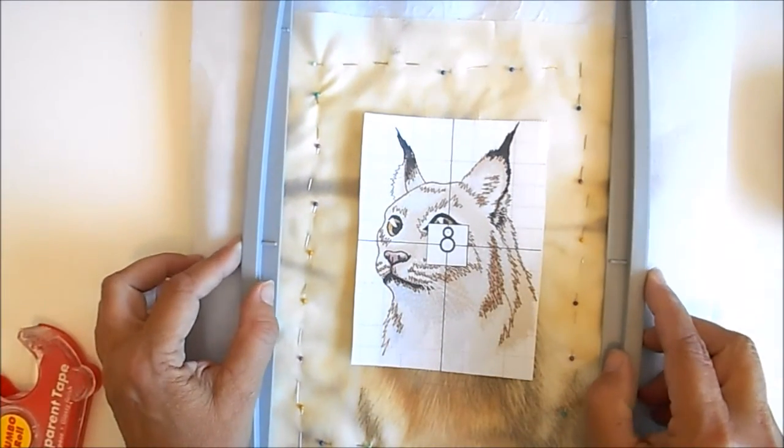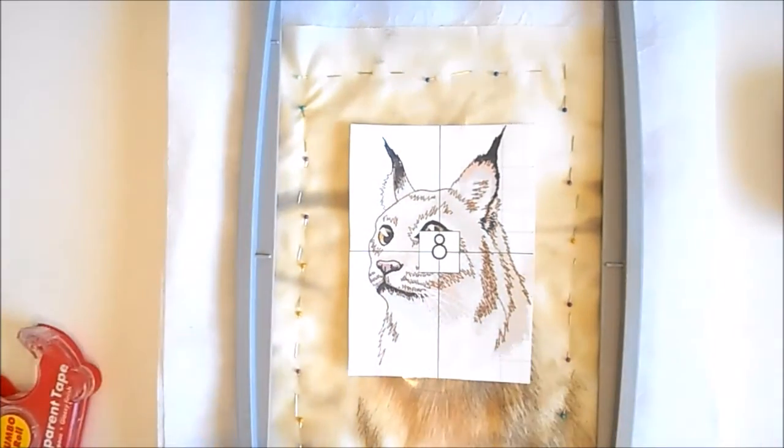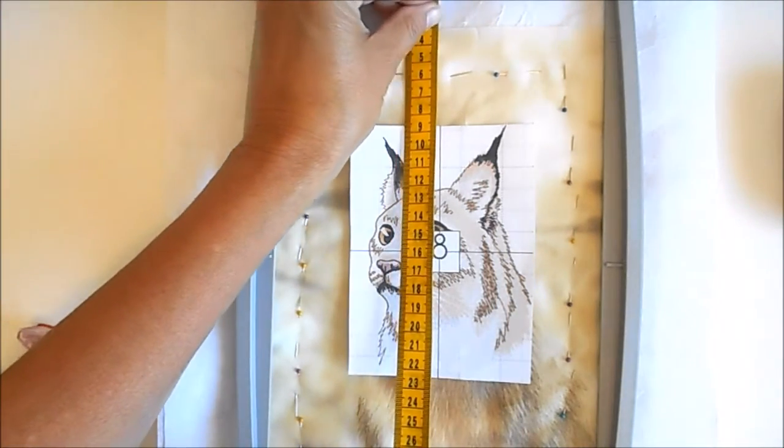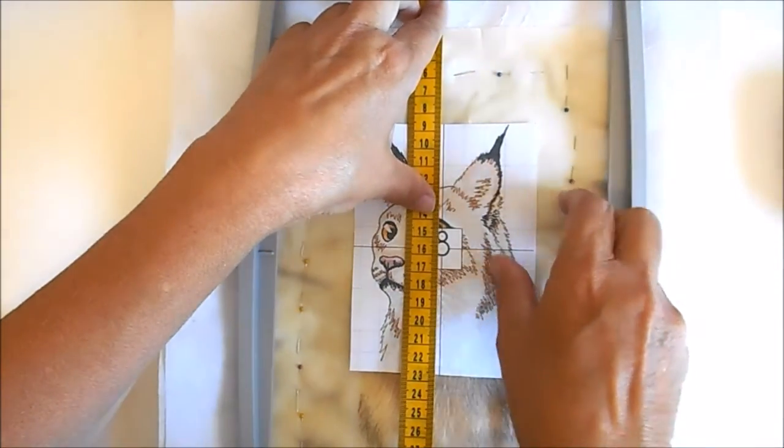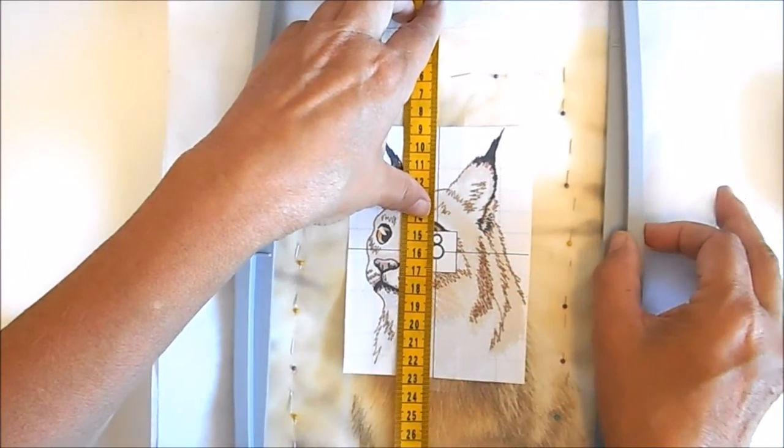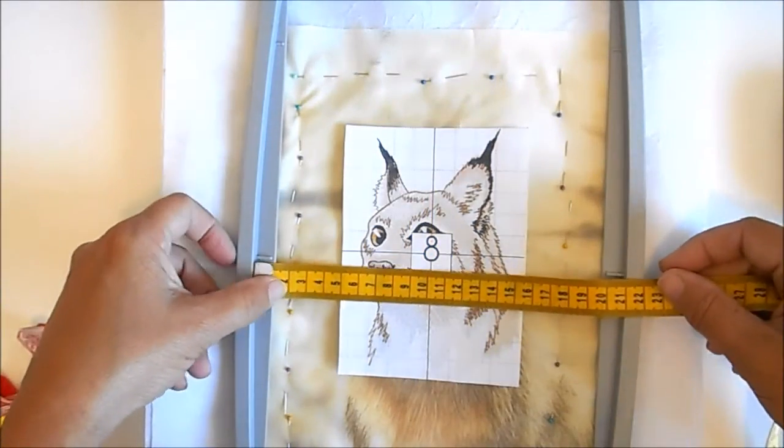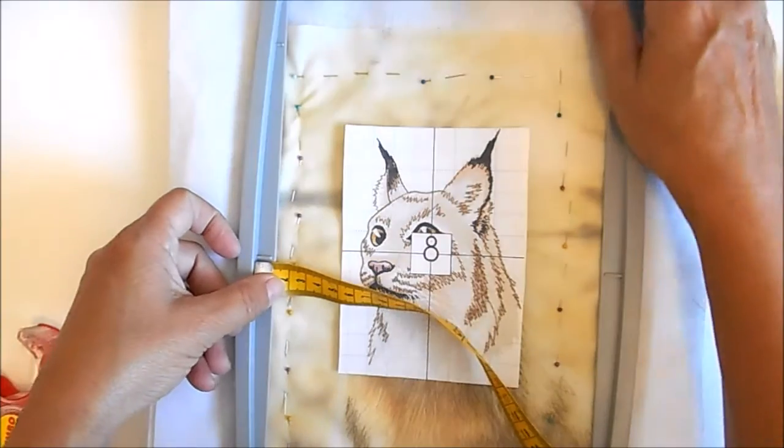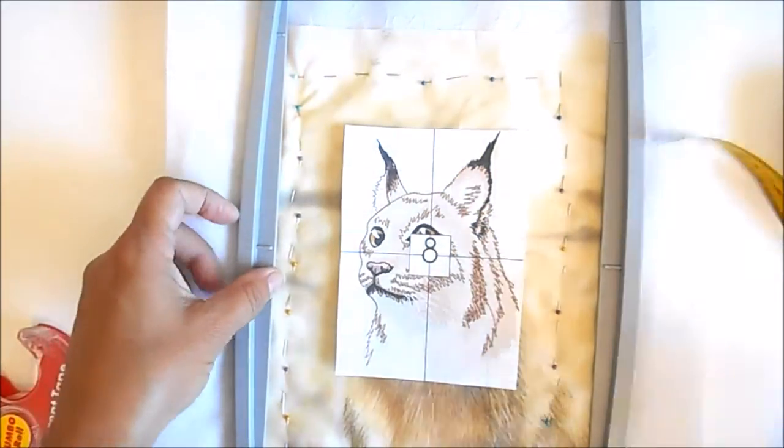And I'll just center the lines. I'm going to grab a ruler really quick. And I'm going to make sure I have it centered while I'm hooping it. And now I'm ready to hoop it.